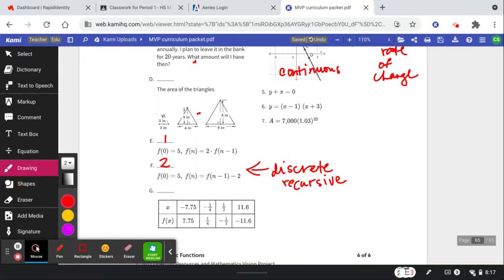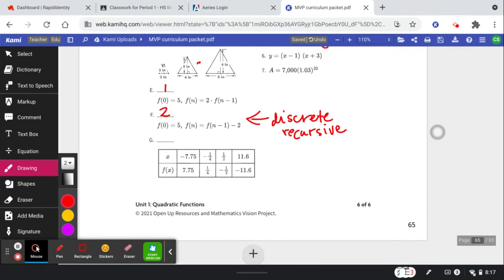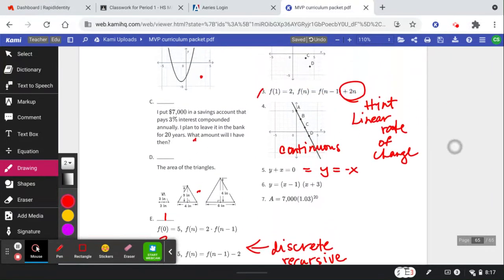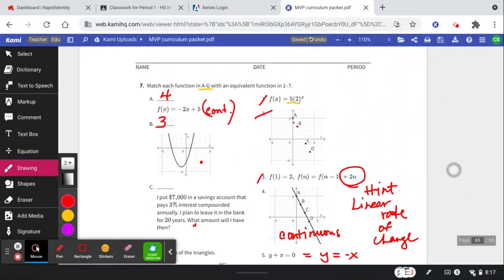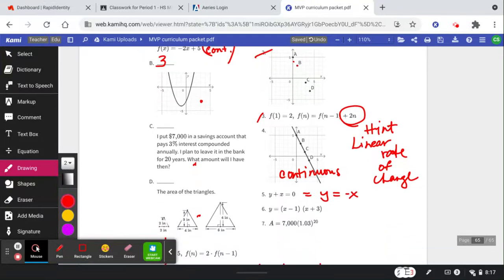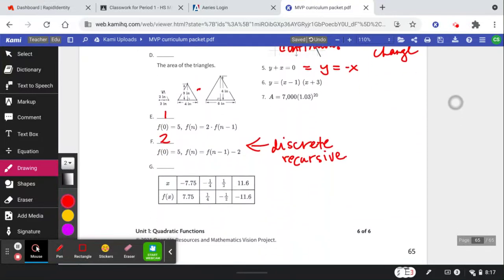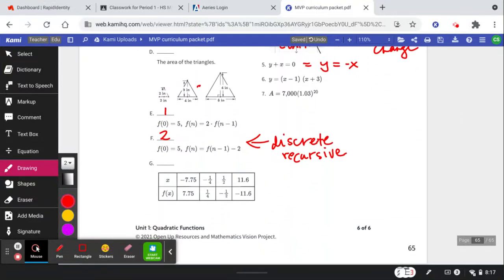Finally, y + x = 0. If I move the x over, this would be y = -x. Check this out: whatever x is, y is the opposite. So there's my y = -x.